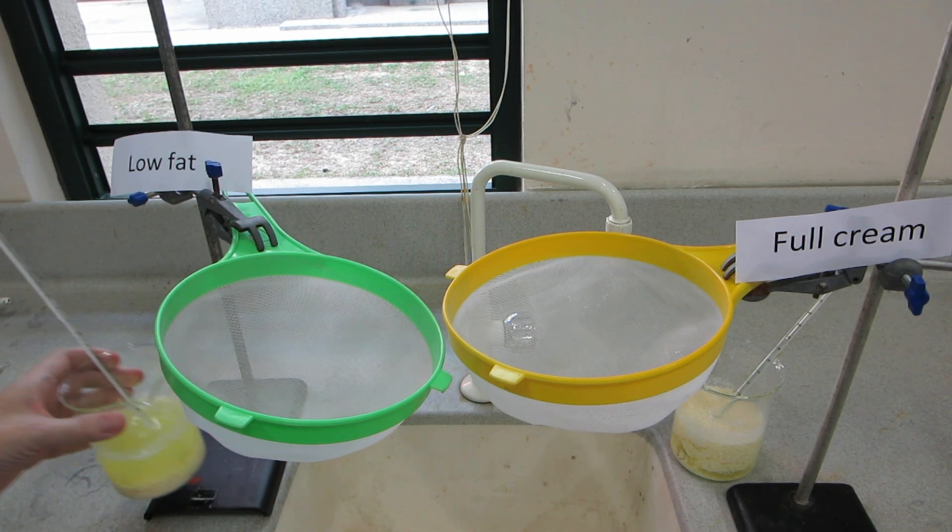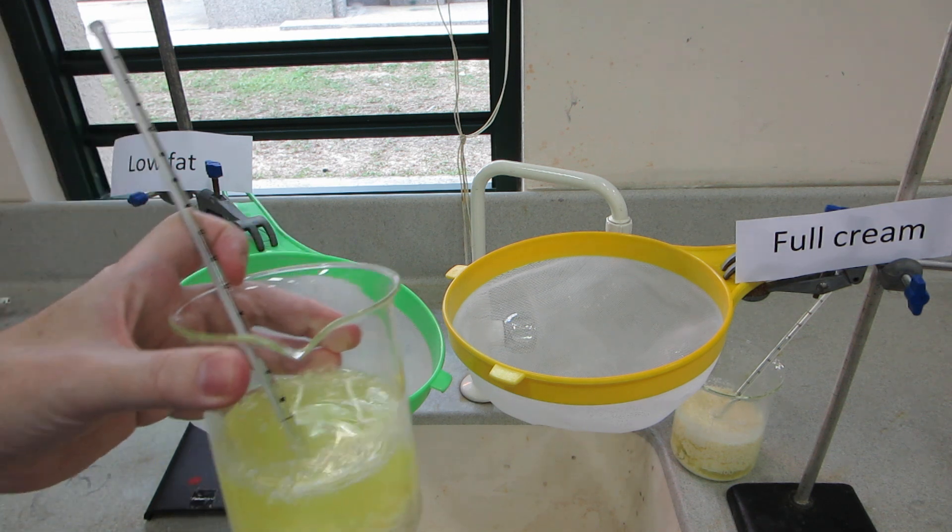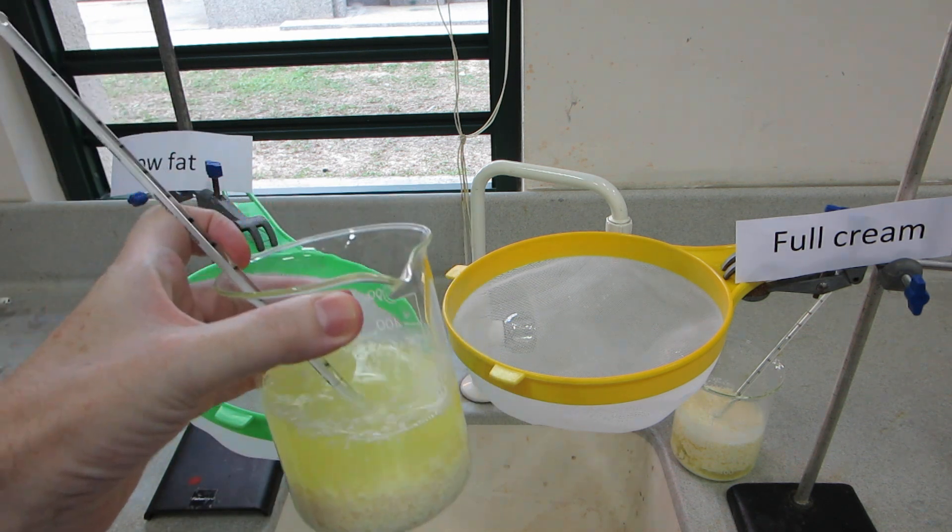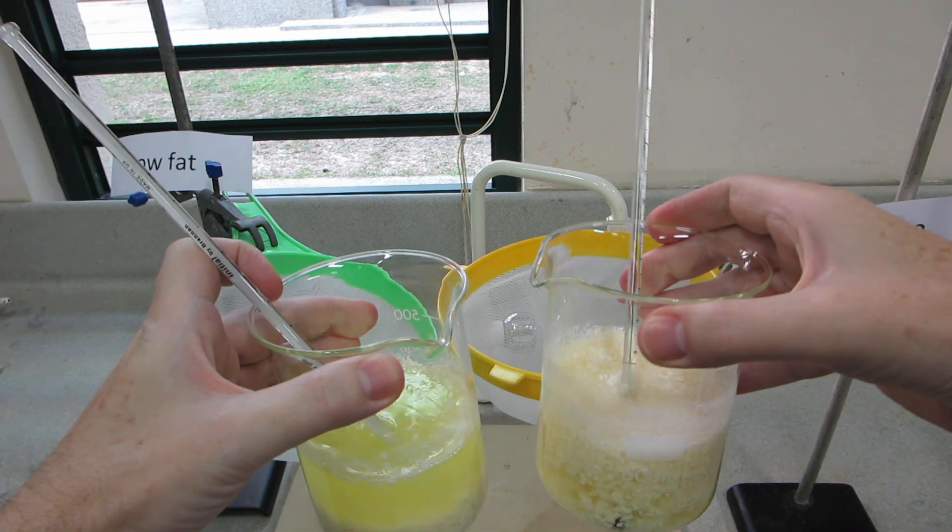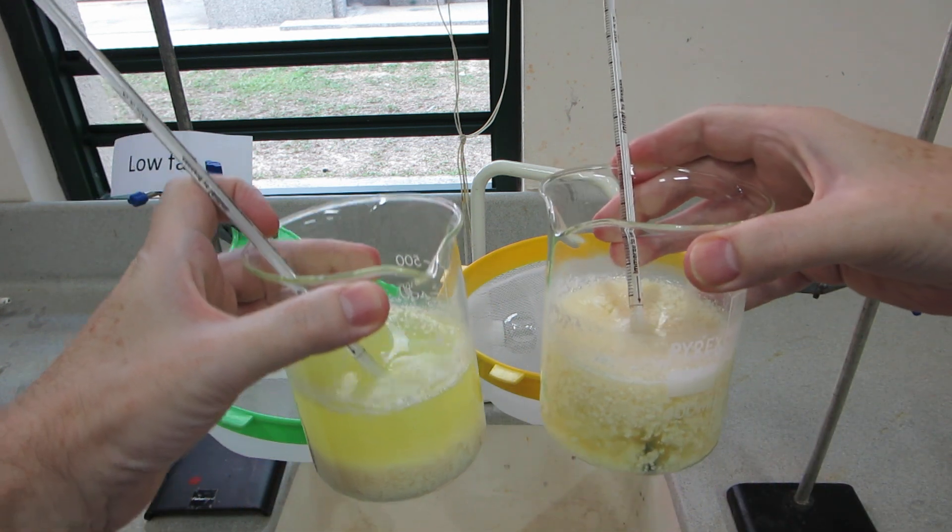Well, here are the two sets of milk we've precipitated out. This is the low fat and over here on the right we have the full cream milk, and there's quite an obvious difference between them.